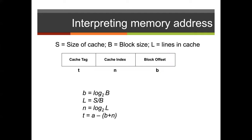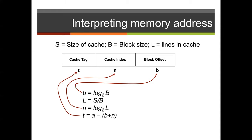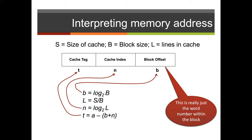To interpret the memory address, each entry in our cache is organized as contiguous words in blocks. The address generated by the CPU contains three parts: a cache tag, a cache index, and a block offset. We denote S as the size of the cache, B as the block size, and L as the lines in the cache, and we can calculate each component of the memory address accordingly. The block offset essentially represents the word number within the block.